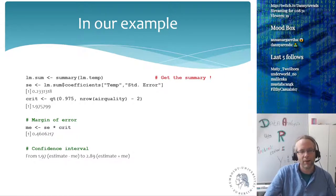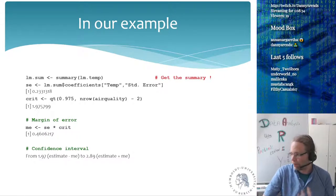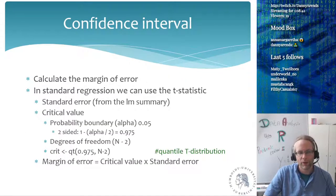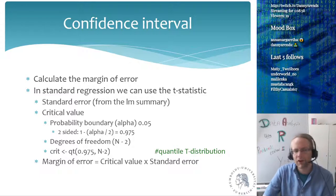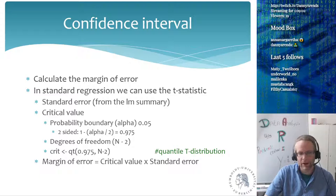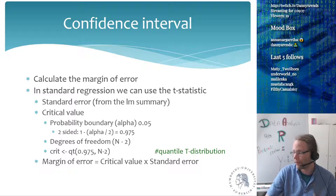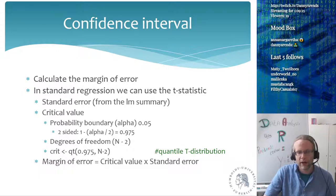In our example for the linear model, where we try to predict the ozone concentration in the air by temperature, we have to calculate some values ourselves. We want to get the margin of error, and for that we need the standard error from the LM summary. We need the critical value, which requires the probability boundary — our alpha coefficient of 0.05 — the degrees of freedom (n minus 2), and then we use the quantile t-distribution. We lose two degrees of freedom because we're estimating both the intercept and the beta regression coefficient for temperature. We multiply these two values together to get our margin of error.